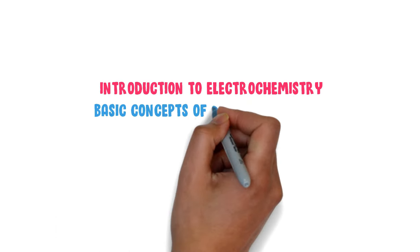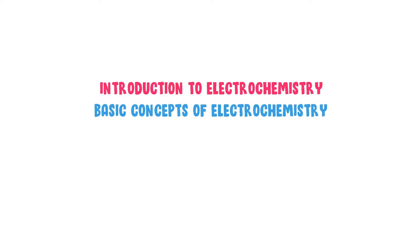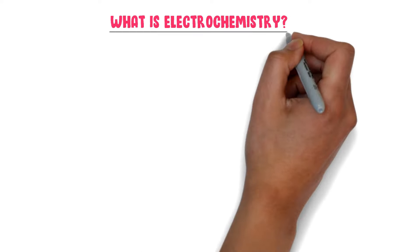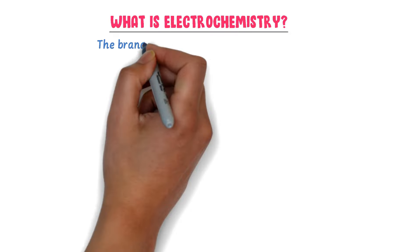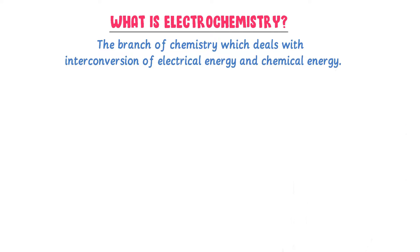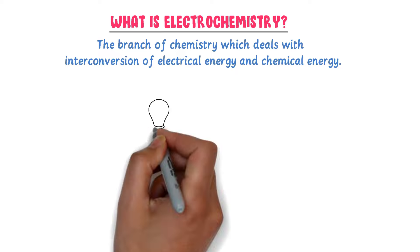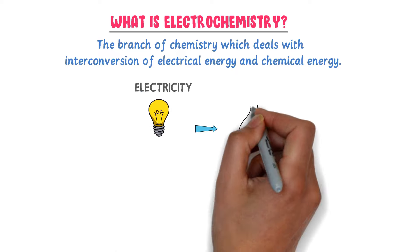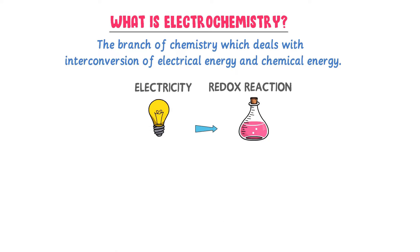Introduction to Electrochemistry — we will learn all the basic concepts of electrochemistry. The branch of chemistry which deals with the interconversion of electrical energy and chemical energy is called electrochemistry. For example, we either use electricity to generate a redox chemical reaction, or we use a redox chemical reaction to generate electricity.